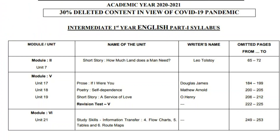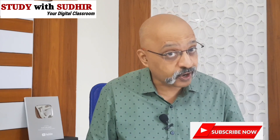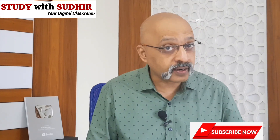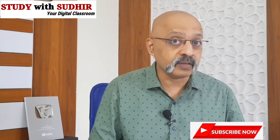Unit number 7, that is 'How Much Land Does a Man Need', a story by Leo Tolstoy, is not part of the syllabus. Another story called 'A Service of Love' by O. Henry is also not part of the syllabus this year. So two stories have been left out. Then in poetry, 'Self-Dependence', a very complicated poem by Matthew Arnold, is also not part of the syllabus.